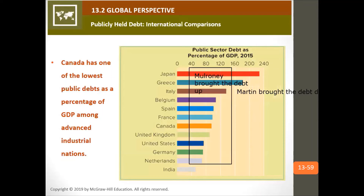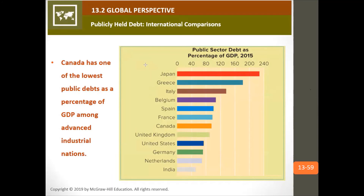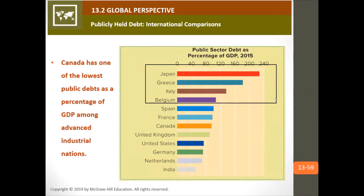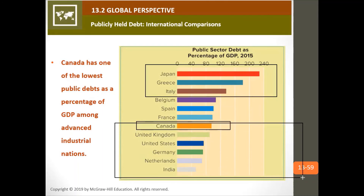Japan has a high amount of debt as a percentage of GDP — those countries really struggle with debt. Canada is pretty low. Japan, Greece, and Italy are in real trouble with their debt.